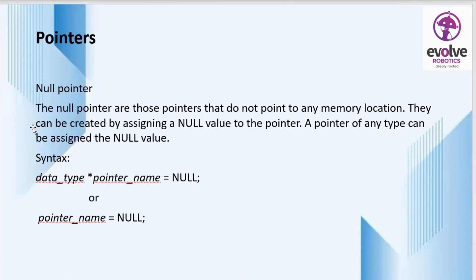The last type is the null pointer. Null pointers are those that do not point to any memory location. They can be created by assigning a null value to the pointer. A pointer of any type can be assigned a null value. The syntax is: data type, pointer name, equals NULL. Alternatively, we can declare a null pointer as: pointer name equals NULL.